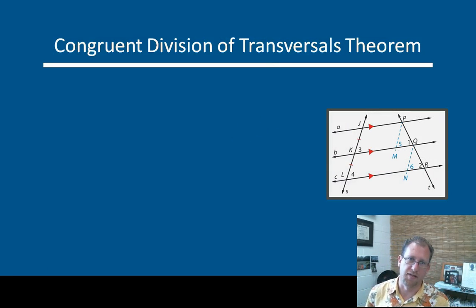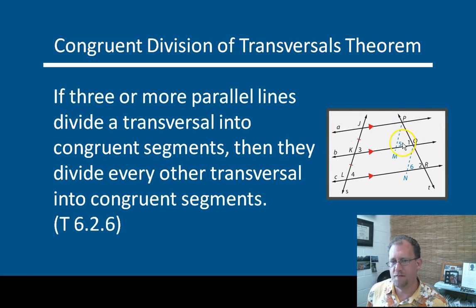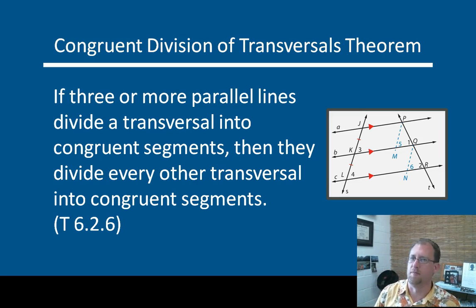Last theorem that we're going to display to you here today is the congruent division of transversals theorem. This is kind of an interesting thing. If I have three or more parallel lines, and I cut the three or more parallel lines with a transversal and I discover that all the segments of my transversal are congruent, that means that these parallel lines are evenly spaced. If that is the case, if it divides any transversal into congruent segments, it will divide all transversals into congruent segments. So if you have parallel lines spaced evenly, no matter how you cut them, no matter what angle your transversal comes at them, as long as it's a transversal and not a parallel line, it will be cut into congruent segments by all of the parallel lines. Kind of an interesting thing. So that's the last proof or the last theorem for the day.